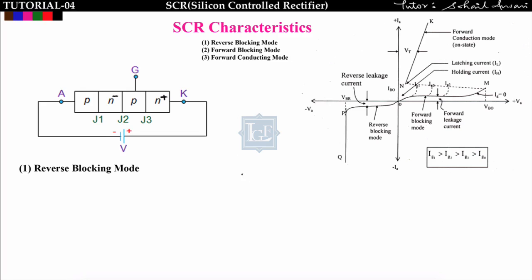There are three modes present in SCR: the first is reverse blocking mode, the second is forward blocking mode, and the third is forward conducting mode. Let us look at each mode one by one, starting with reverse blocking mode.